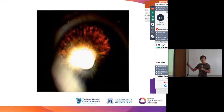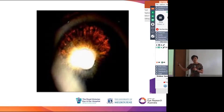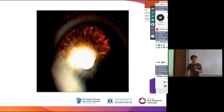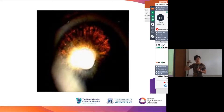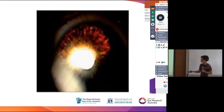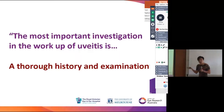The most important investigation in all uveitis patients is a thorough history and examination. A patient in their mid-forties to fifties with unilateral hypertensive uveitis: herpetic disease until proven otherwise. With HLA-B27-associated uveitis, IOP is not typically raised — they're usually hypotensive. Herpetic disease and toxoplasma are your main differentials, but you must exclude posterior segment inflammation for toxo. Again, the most important investigation is a good history and a good examination.